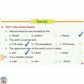Number 4 — it is a metallic mineral. इनमें से कौन सा metallic mineral है? Options: coal, iron, petrol. Answer is B, iron.